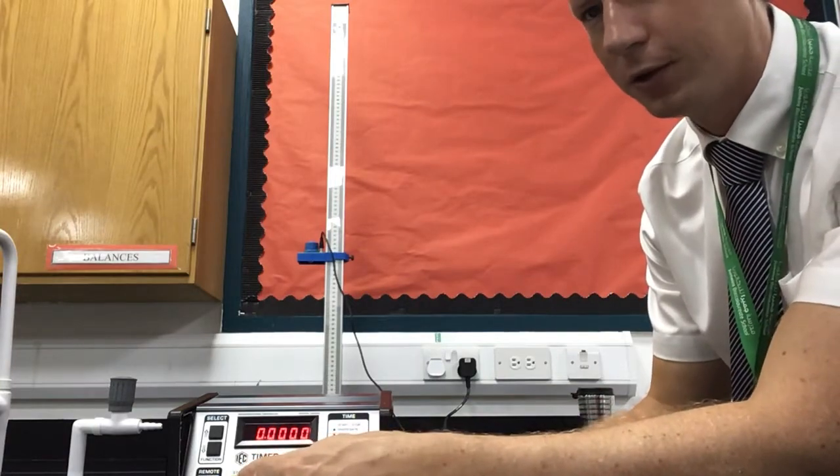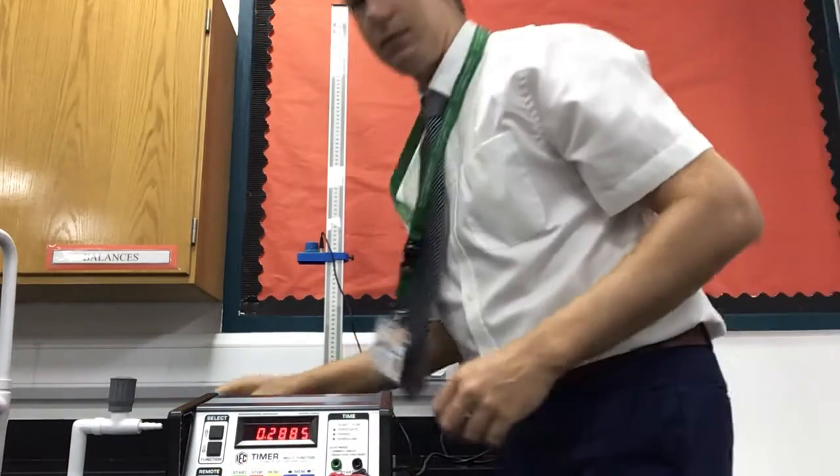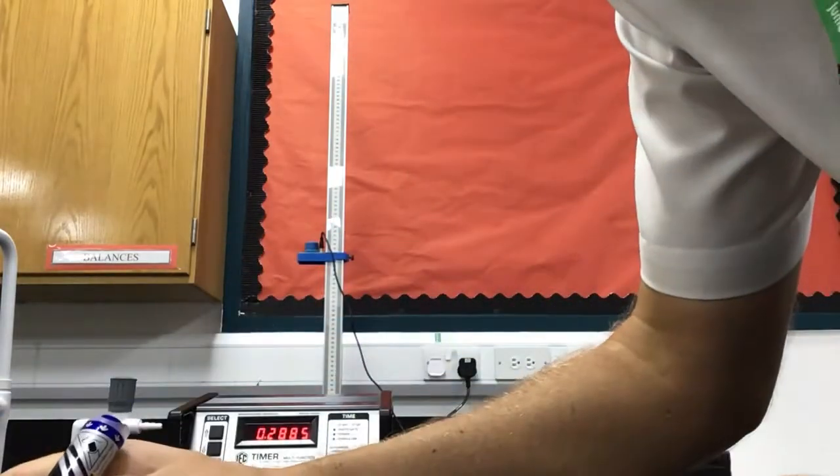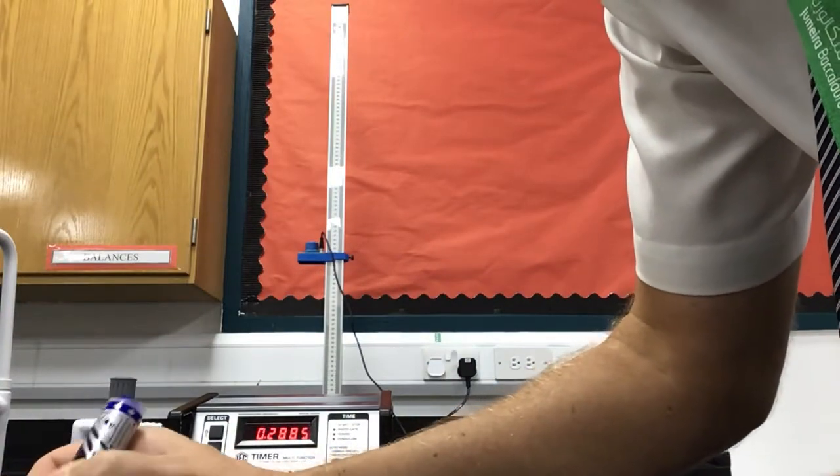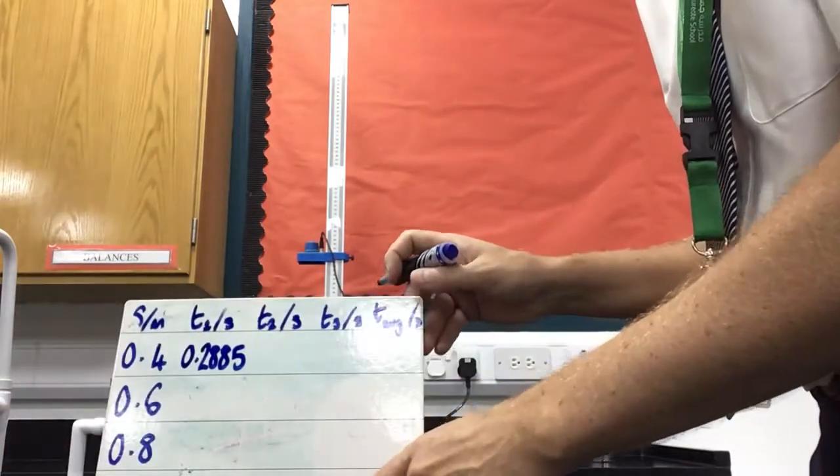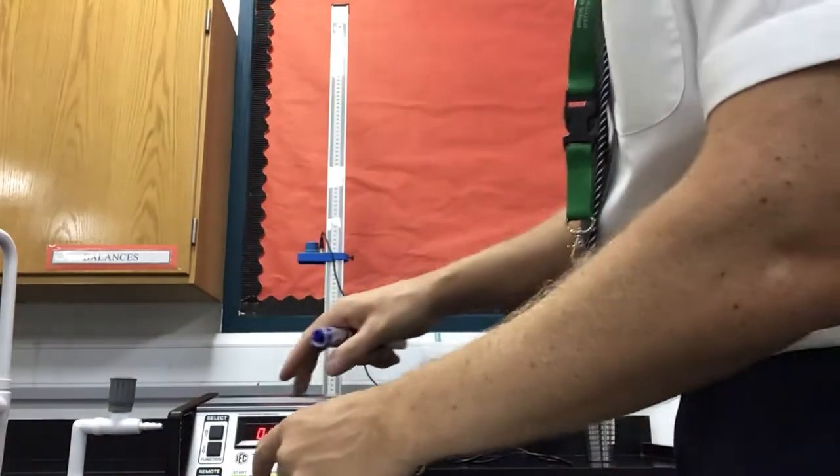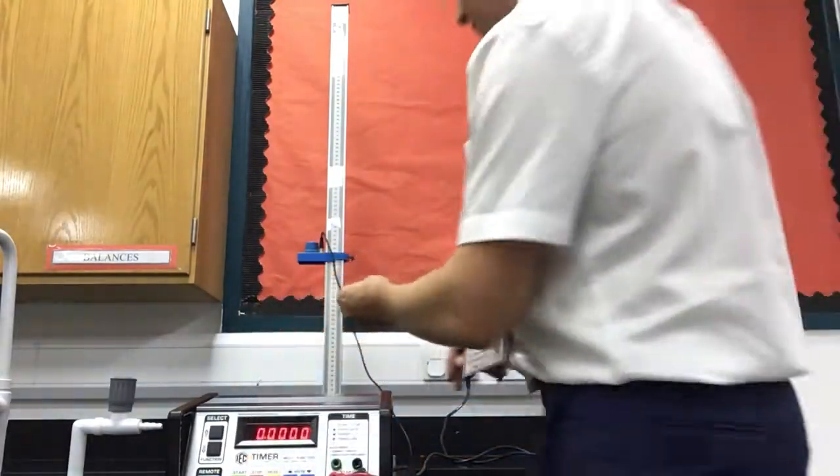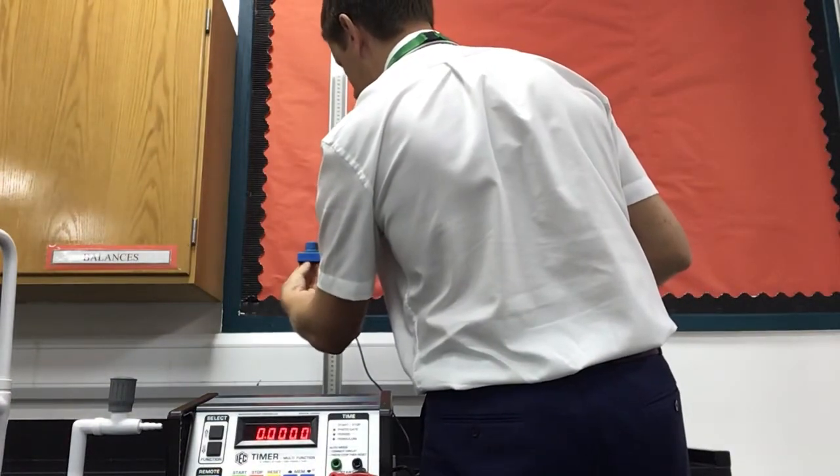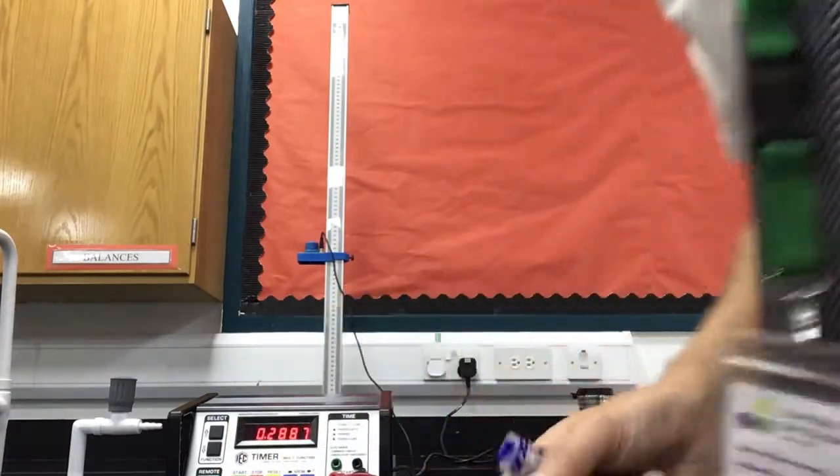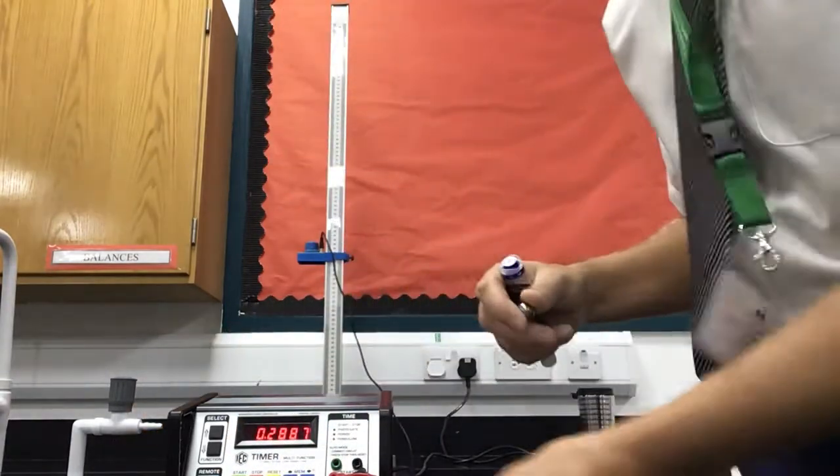I'm going to press start in 3, 2, 1. And you can see that the time on there is 0.2885. So then I press reset, put the ball back, and do it again. 0.2887.